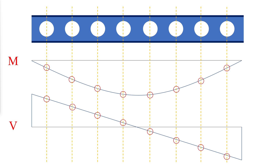The global shear and moment interact to produce an overall stress. Therefore, the most efficient use of the beam is in a situation where the maximum global shear and moment occur away from each other, such as a simply supported beam with a uniform load.